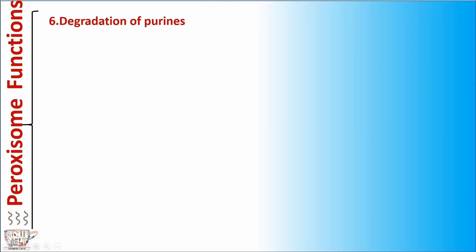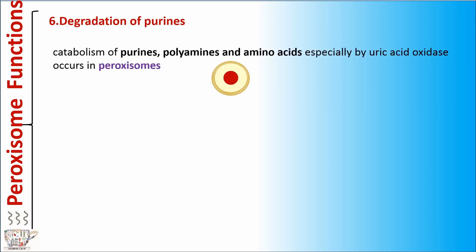Function number six: degradation of purines. Catabolism of purines, polyamines, and amino acids, especially with uric acid oxidase, occurs in proxysomes.